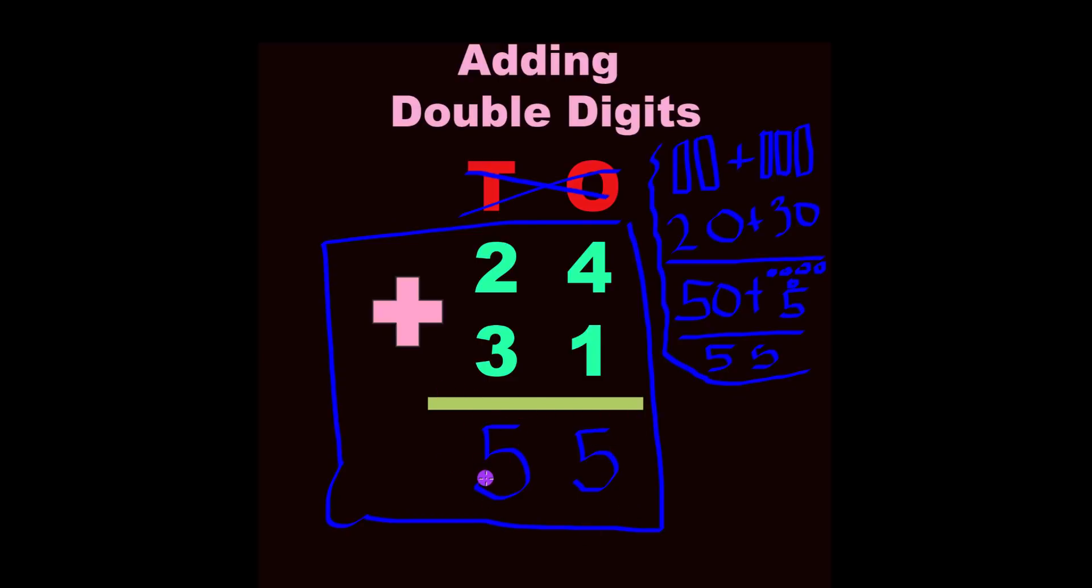Write underneath the line. I see so many kids that do that, but that has to be taught. You write the number under the line. So 4 plus 1 equals 5, and 2 plus 3 equals 5. And you have the final answer, 55.